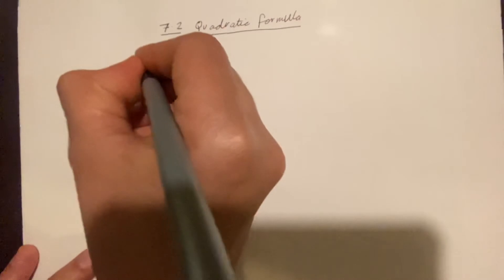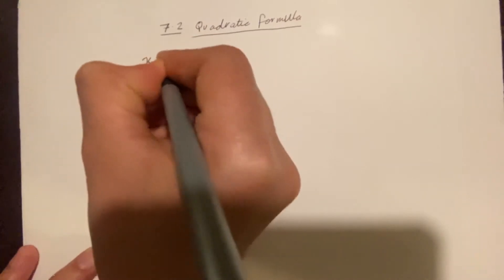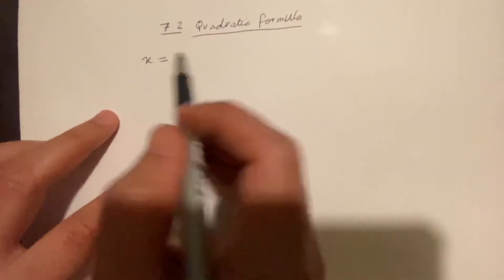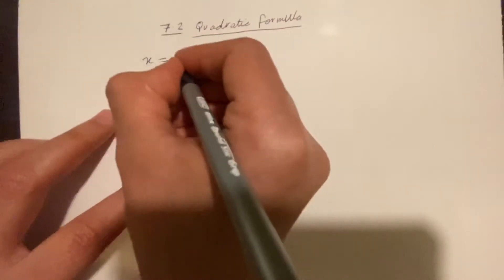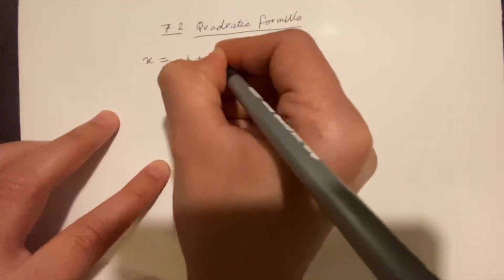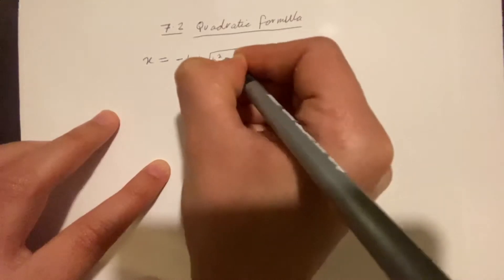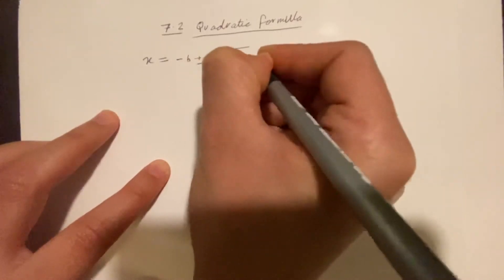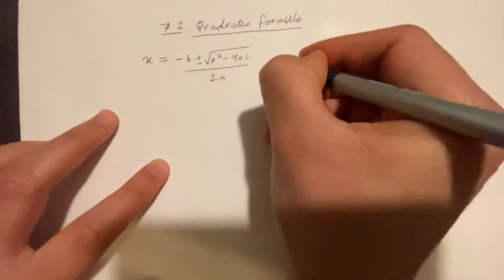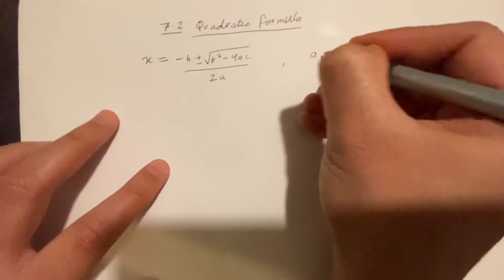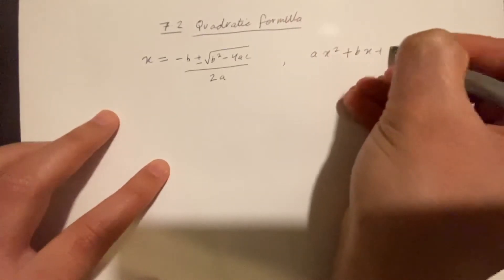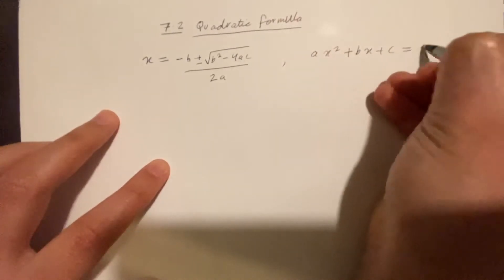The quadratic formula is: when you're trying to solve a quadratic equation, x equals negative b, plus or minus the square root of b squared minus 4ac, over 2a. And the standard quadratic equation is x squared plus bx plus c equals 0.